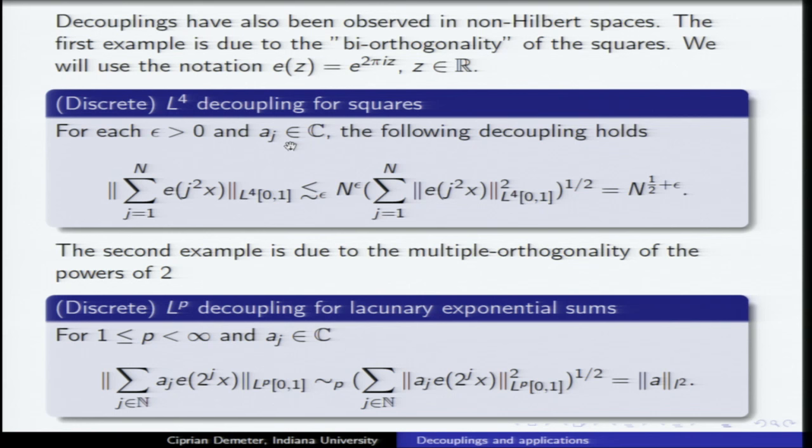How do you prove such a result? You use the fact that 4 is an even integer — that's crucial. You expand the fourth power, you end up with additive quadruples. And at the end of the day, it's all about how many lattice points you have on a circle of radius n. We know there aren't too many, and that makes it possible.